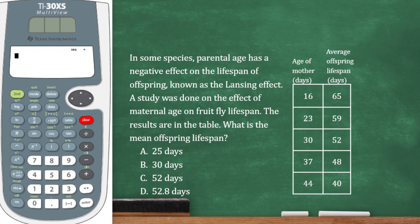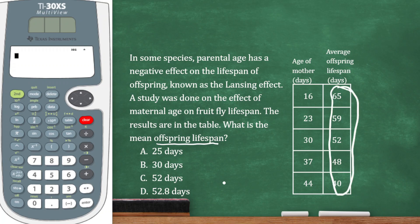In some species, parental age has a negative effect on the lifespan of offspring, known as the Lansing effect. A study was done on the effect of maternal age on fruit fly lifespan — the results are in the table. What is the mean offspring lifespan? We have two columns: age of the mother and average offspring lifespan. To find the mean, we're going to add everything up and divide by however many numbers there are.